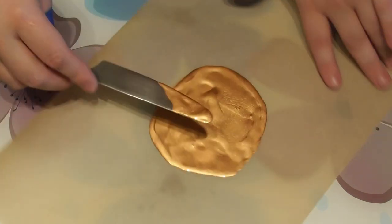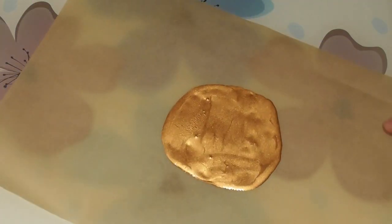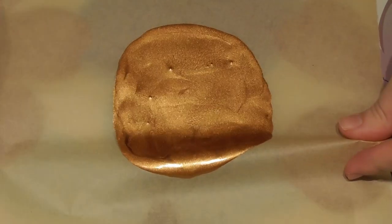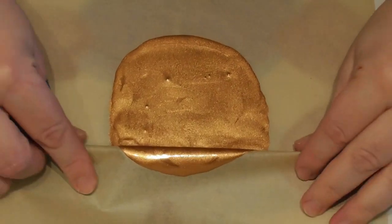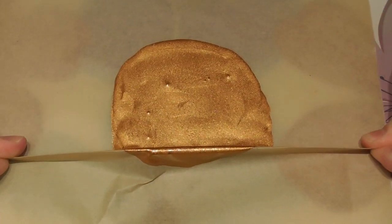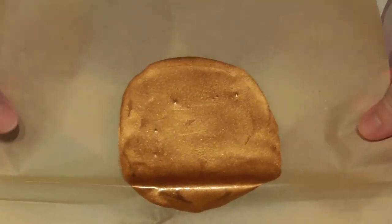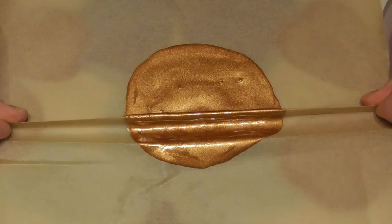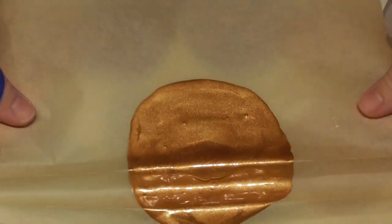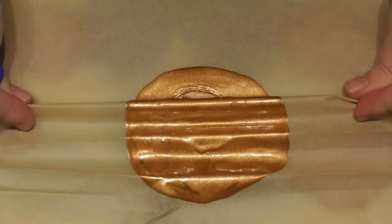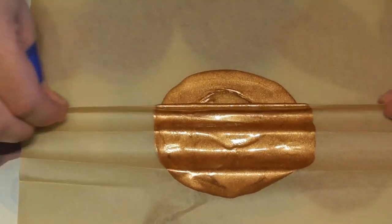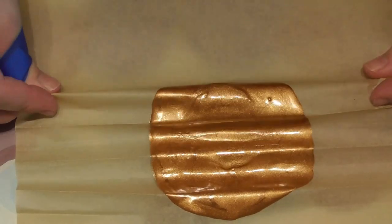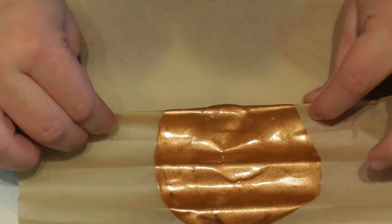Once your chocolate or in this case confectioners drip has not completely set but set enough, you are then able to manipulate the baking paper without the chocolate moving too much. So you want to start by folding in simple pleats like you can see me doing here.